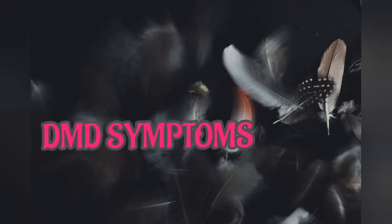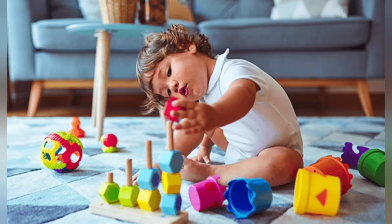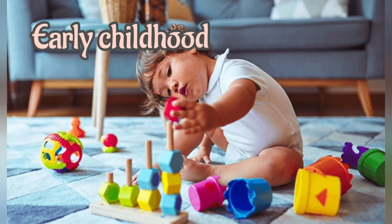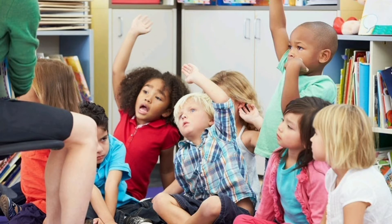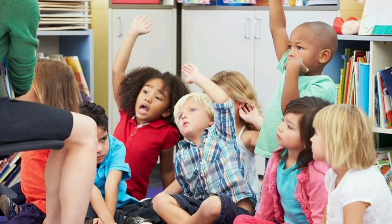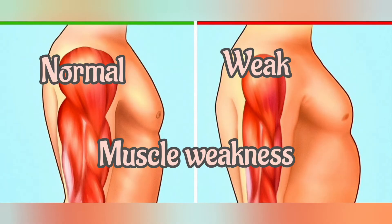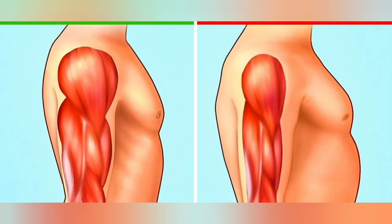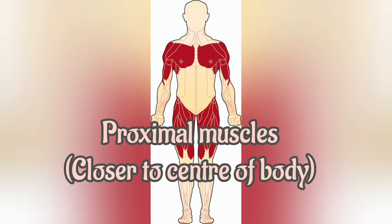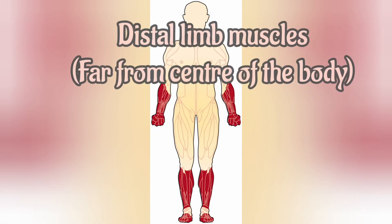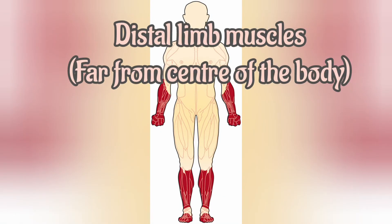Coming to the DMD symptoms. The DMD symptom onset is in early childhood, usually between ages 2 and 3. The disease primarily affects boys, but in rare cases it can affect girls. Muscle weakness is the principal symptom of DMD. It can begin as early as age 2 or 3, first affecting the proximal muscles, i.e. those close to the core of the body, and later affecting the distal limb muscles, i.e. those close to the extremities.